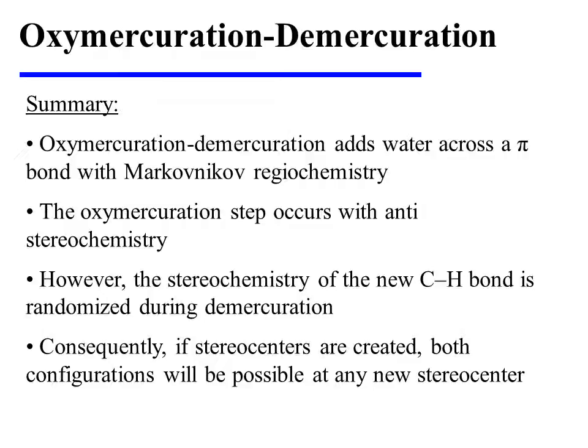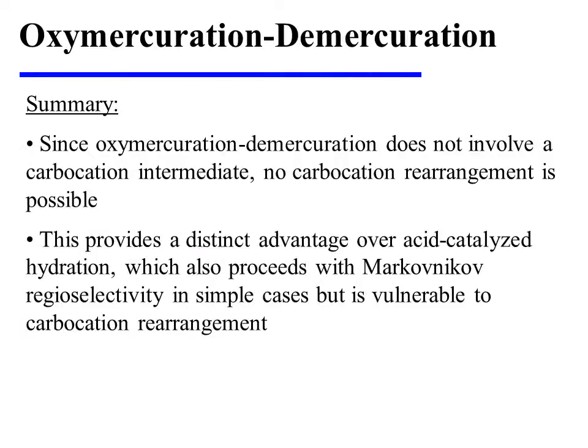In summary, oxymercuration-demercuration adds water across the pi bond of an alkene with Markovnikov regiochemistry. The oxymercuration step occurs with anti-stereochemistry. However, the stereochemistry of the new C–H bond is randomized during demercuration; therefore, if stereocenters are created, both configurations will be possible at any new stereocenter. Since oxymercuration-demercuration does not involve a carbocation intermediate, no carbocation rearrangement is possible. This provides a distinct advantage over acid-catalyzed hydration, which also proceeds with Markovnikov regioselectivity but is vulnerable to carbocation rearrangement.